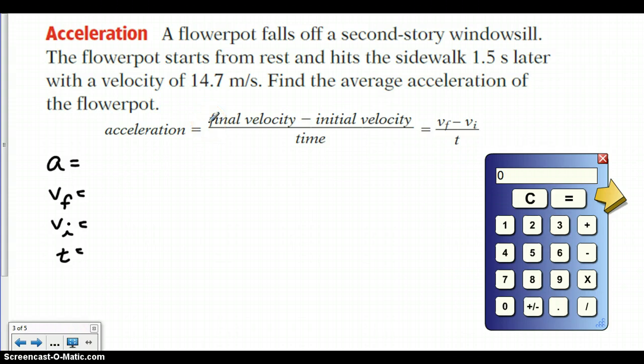If we go through and read through our problem at the top, we can start to figure out some of our variables. In this case, the flowerpot starts from rest and hits the sidewalk 1.5 seconds later. So right away we know our time is 1.5 seconds. With a velocity of 14.7 meters per second, that means we know what our final velocity was.